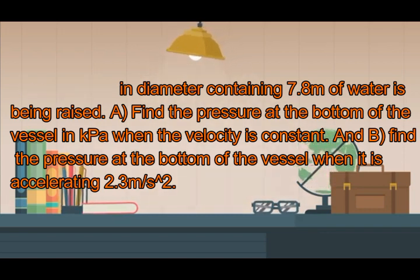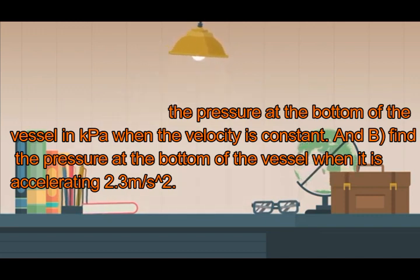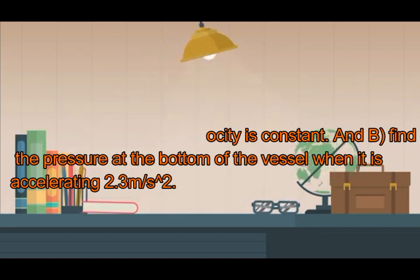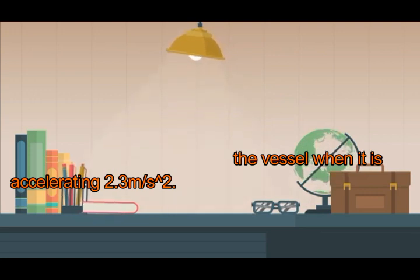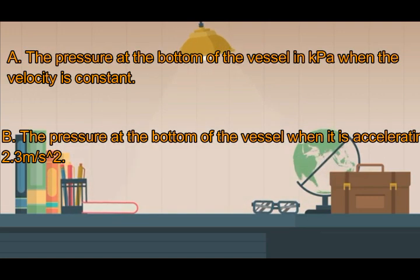And B, find the pressure at the bottom of the vessel when it is accelerating at 2.3 meters per second squared. We have to solve two things: the pressure at the bottom when velocity is constant and the pressure when it is accelerating at 2.3 meters per second squared.